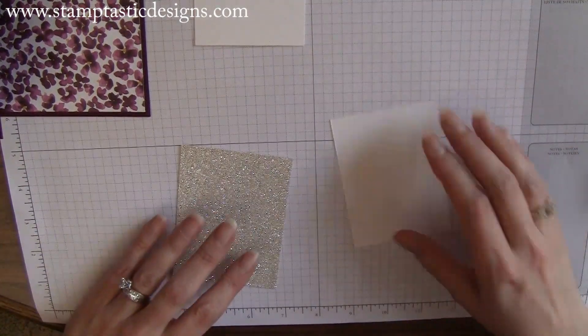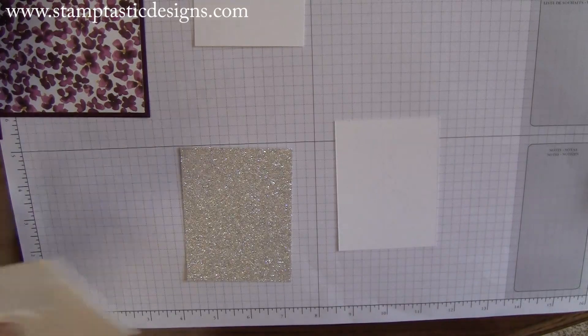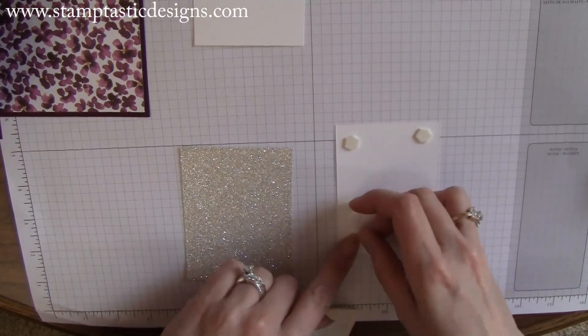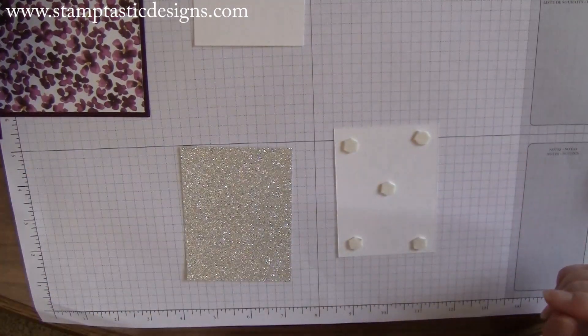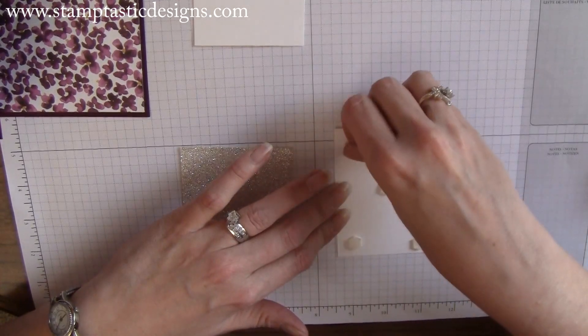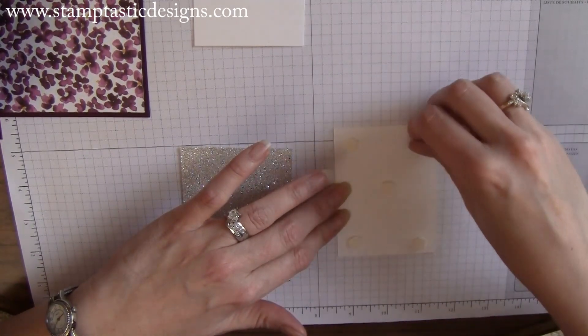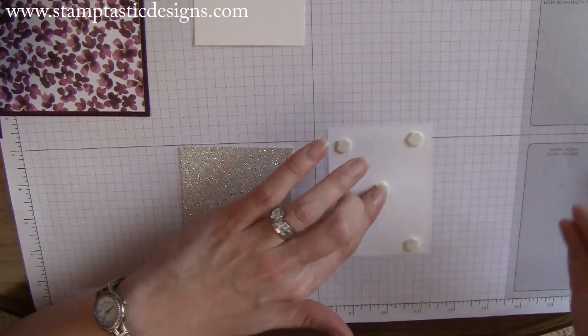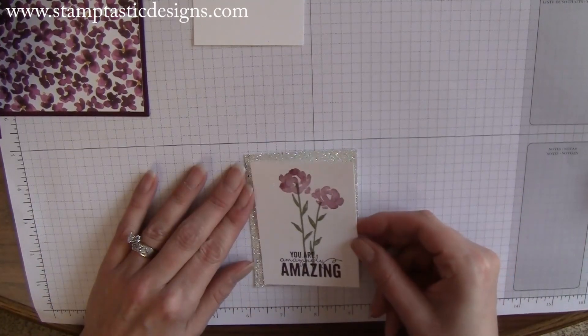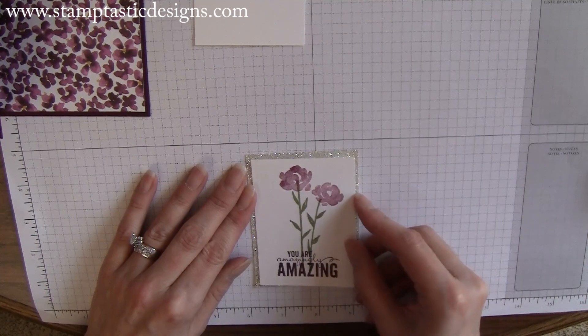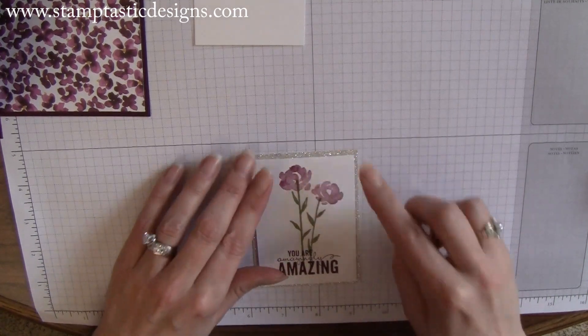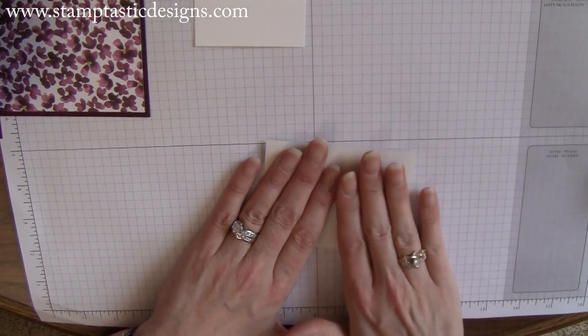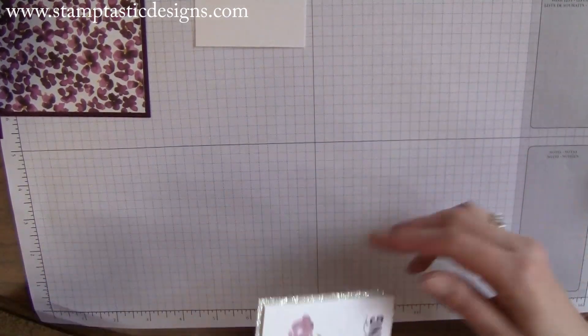I'm going to flip it over. In the meantime, while it's drying, I'm putting a couple of dimensionals on the back of the stamped piece because dimensionals stick better to glimmer paper. Regular snail adhesive doesn't stick very well or very long. Even dimensionals don't stick very long because the glimmer paper has so much glitter. I'm pressing this down upside down so I don't smudge anything.